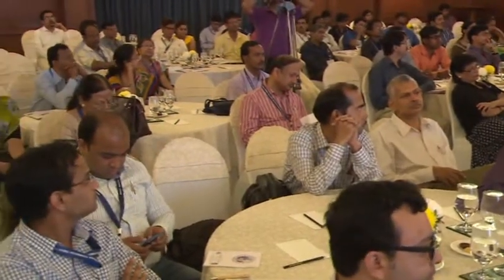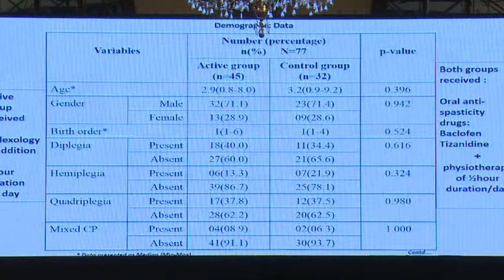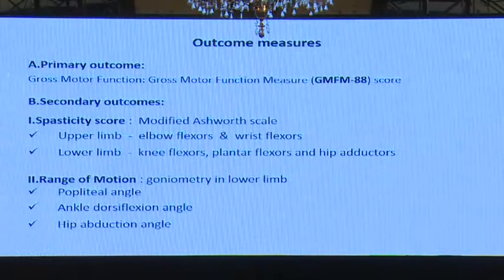Using reflexology — which represents all body organs on the feet — we have carried out many clinical trials, including intractable epilepsy, osteoarthritis, and cerebral palsy. The CP study is ongoing. In the control arm, only conventional therapies are given; in the active arm, reflexology is applied in addition. The sample size is 77. The primary outcome was gross motor function using GMFM-88 score, and secondary outcome measures were spasticity score and range of motion using goniometry. In the active group, there is almost three times improvement, with a P value of 0.008, which is statistically significant. Both ITT and per-protocol analyses were performed.